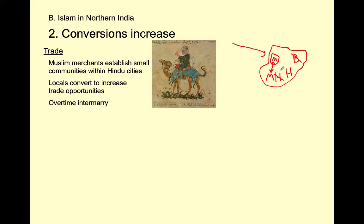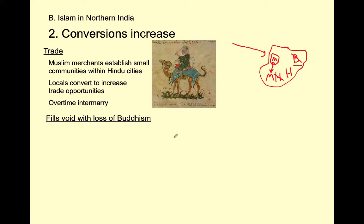A third way people convert: let's say a Hindu has a daughter who falls in love with a Muslim merchant's son, and in order to marry him, she has to convert to Islam. Some people convert through marriage. Another way: people who were Buddhists no longer have a monastery to pray at or support. They're looking for something to replace it, and here is this new, vibrant religion — Islam. It has lots of spirituality, a close connection to Allah. With access to the Buddha wiped out and no temple anymore, it's natural to say: let me see what this new faith has to offer. Some former Buddhists convert to Islam.